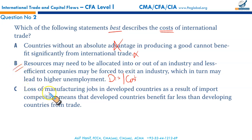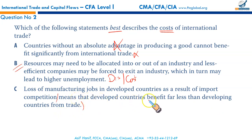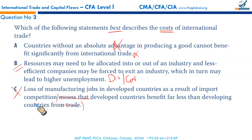Why not option C? Option C states that loss of manufacturing jobs in developed countries as a result of import competition means that developed countries benefit far less than developing countries from trade — this is incorrect. Developed countries can produce at low cost and exchange goods and services where they have comparative advantage. That makes option B the correct answer.